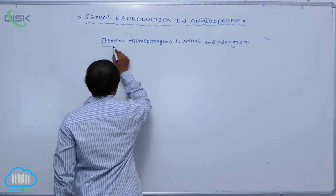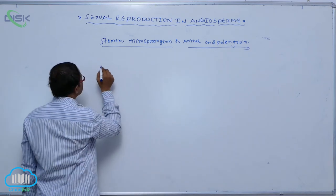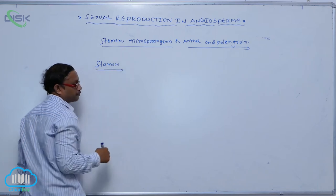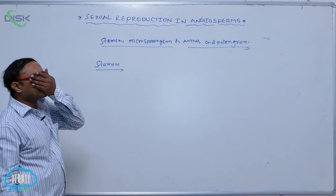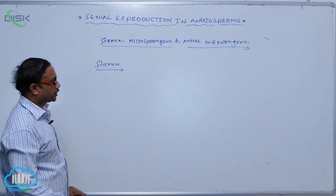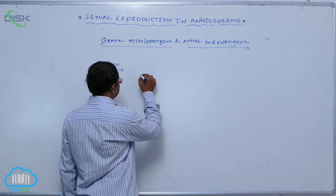This first one is the stamen. Stamen is the male reproductive part. The collective term for stamens is known as androecium, which is the male reproductive part of the flower.